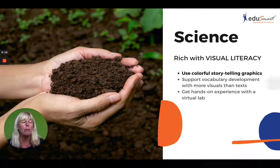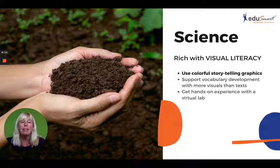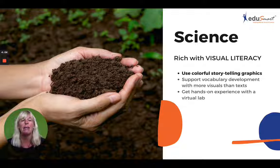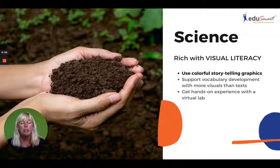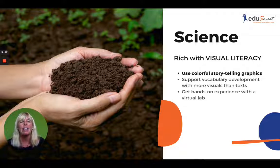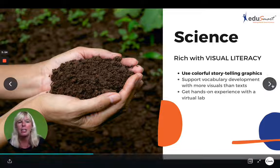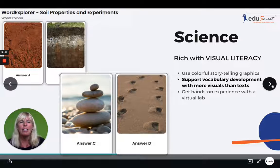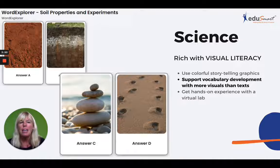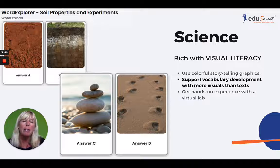I always start with strong visual literacy. Edgesmart is famous for this — it's in every single piece of curriculum they push out and in every single topic. Science is rich with visual literacy, and it's super important that you use colorful storytelling images, just as the one posted on this page. Look at how strong visual literacy supports vocabulary development inside this piece of Edgesmart work called Word Explorer.